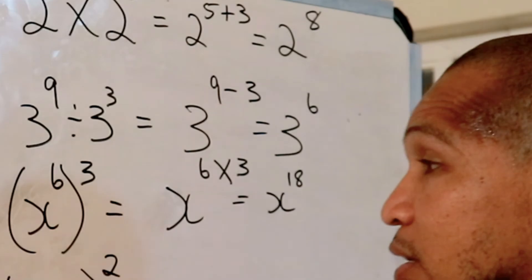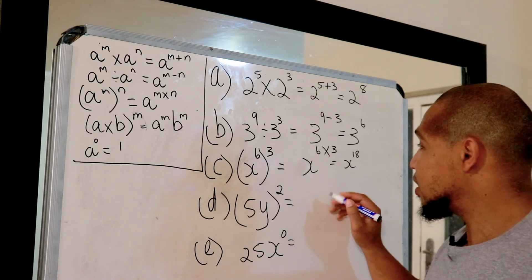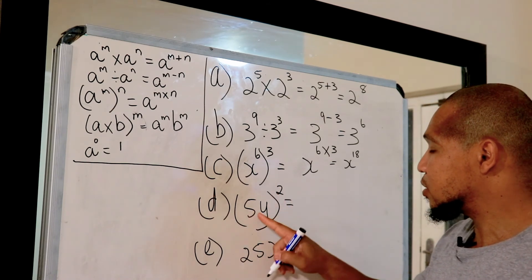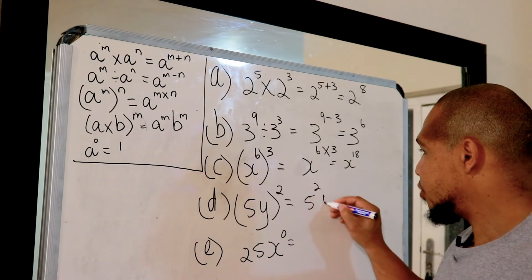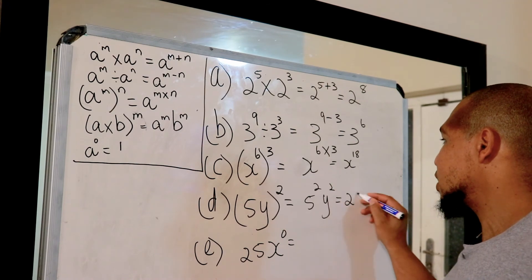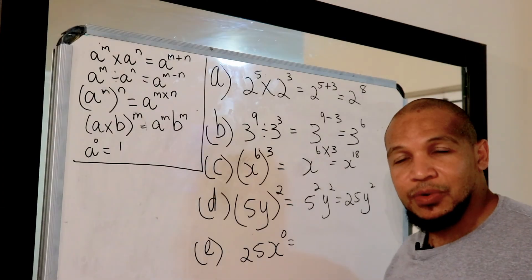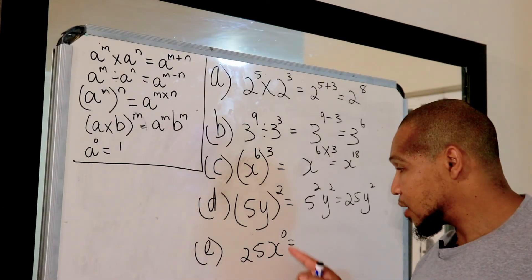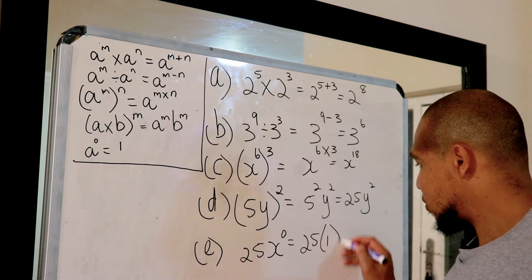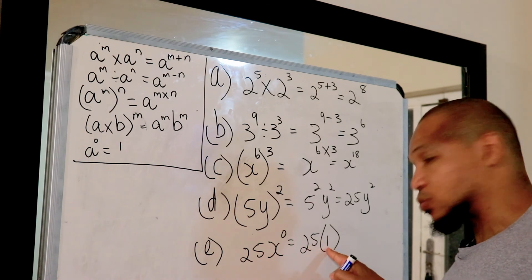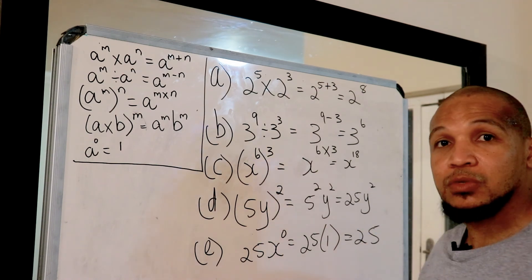For five y squared in brackets to the power of two: still rule number three, where the square is applicable to both the five and the y. So that gives us five squared times y squared, which we can write as 25y². Then there's something to the power of zero, and we know anything to the power of zero equals one. Since the zero is only applicable to the x, x to the power of zero is one, and one times 25 is still 25.